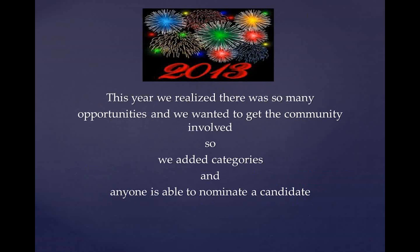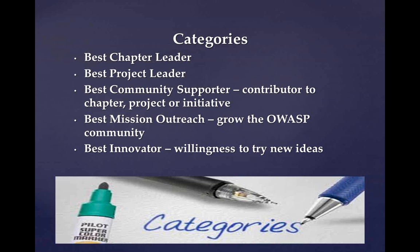Looking forward to 2013, we decided to do things a little bit differently. Last year we had ten candidates and it was essentially an eight-way tie for first place, making it very difficult to pick just one winner. So this year we opened up more categories and the nomination process so that anybody — whether a chapter leader, project leader, chapter member, project contributor, or just a mailing list lurker — can participate. The five categories for 2013 are: Best Chapter Leader, Best Project Leader, Best Community Supporter, Best Mission Outreach, and Best Innovator.